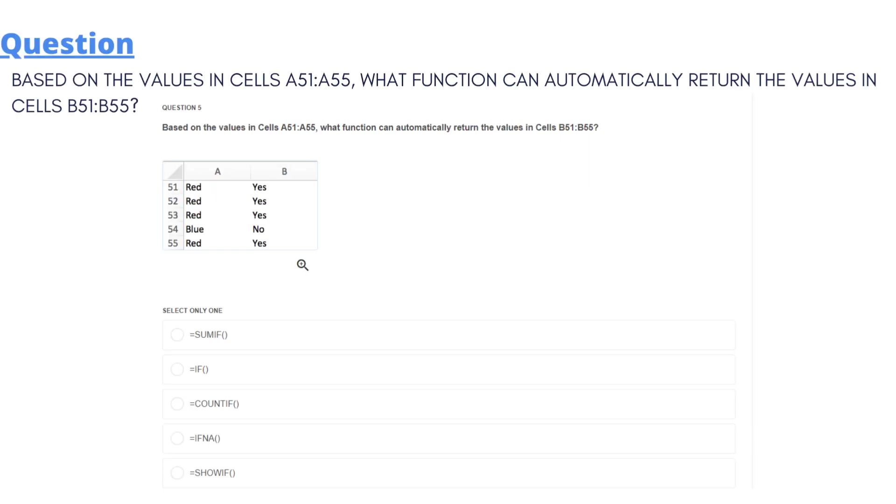So I'm going to read the question. Based on the value in cells A51 and A55, what function can automatically return the values in cells B51 and B55? So we have a table with red and blue, yes and no.